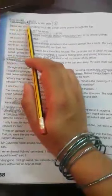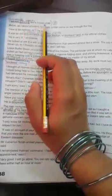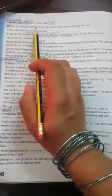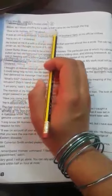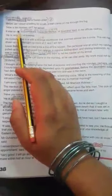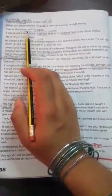I left him babbling like a foolish child. Below, as I stood whistling for a cab, a man came on me through the fog. How is Mr. Holmes, sir? he asked.